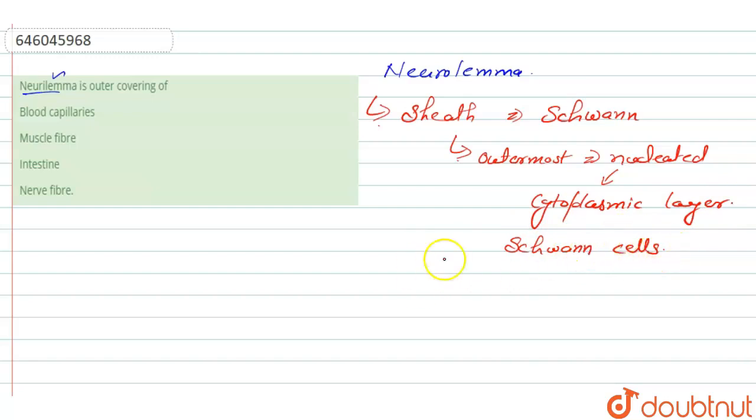So this neurolema surrounds the axons of neurons. So we can say that here this neurolema lies outside the myelin sheath—myelin sheath.